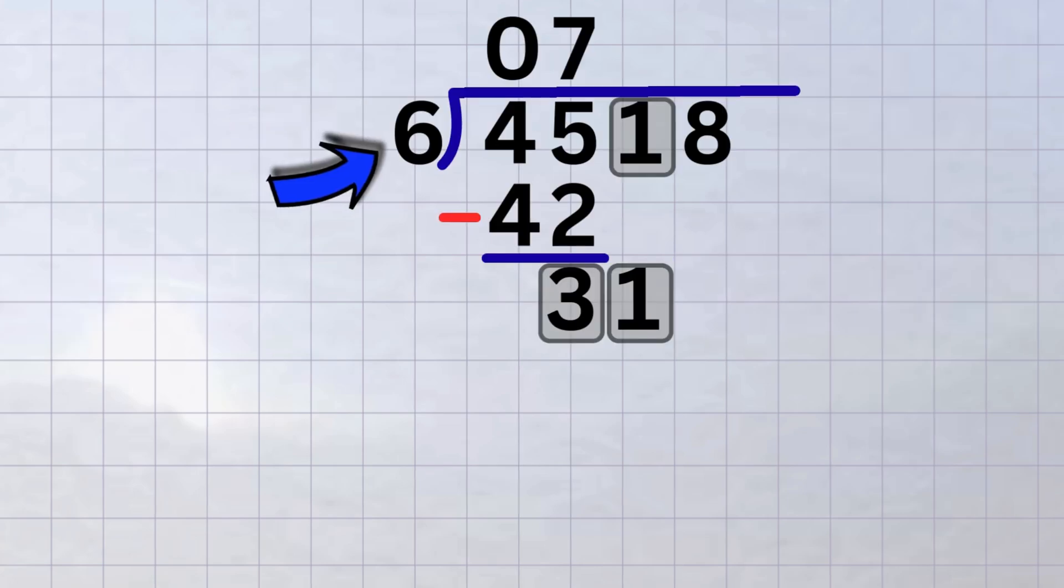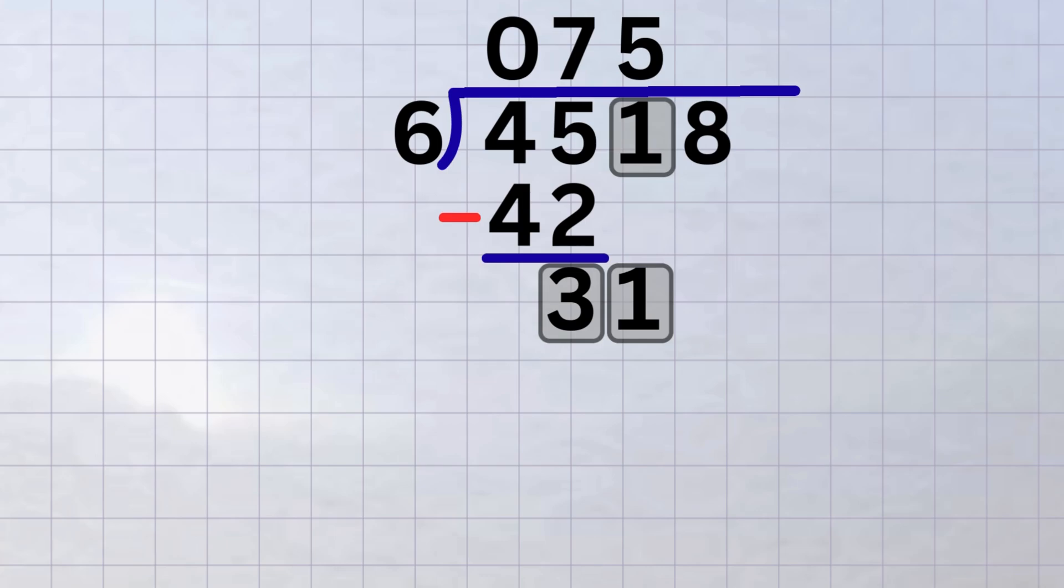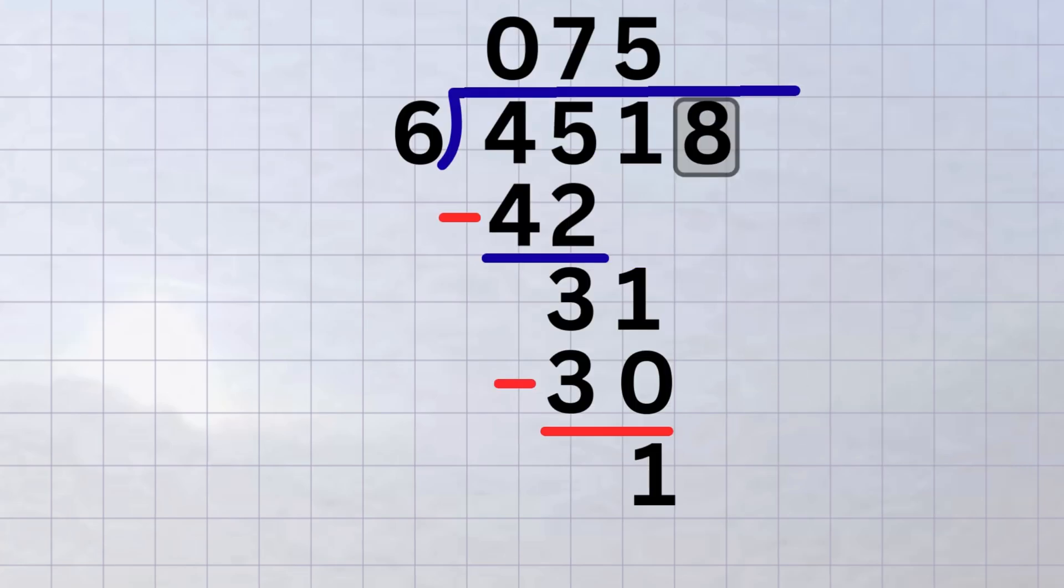Now we ask, how many times does six fit into thirty-one? The answer is five. Because six times five equals thirty, which is the closest we can get without going over. So we write the five in the quotient above the one in the dividend. Then we multiply, six times five equals thirty. Subtract thirty-one minus thirty equals one. Next, bring down the eight from the dividend, and place it beside the one to make eighteen.